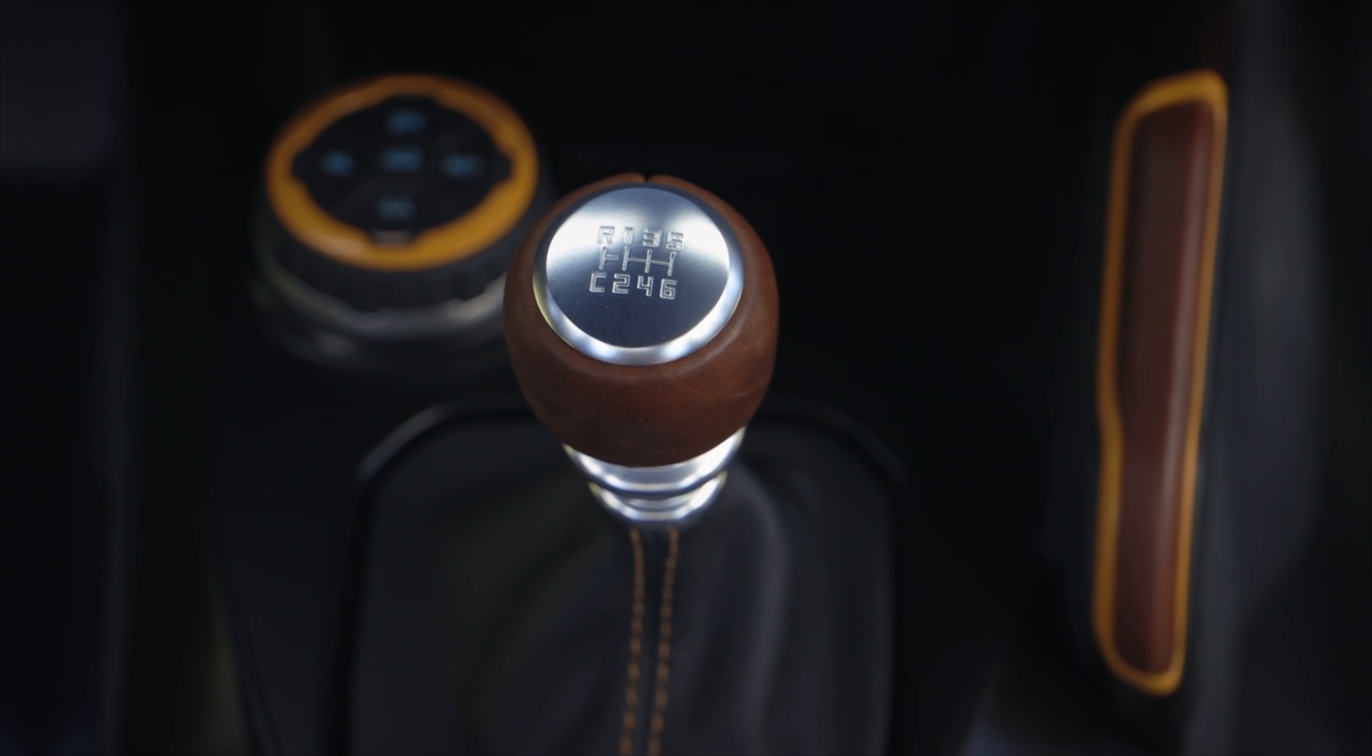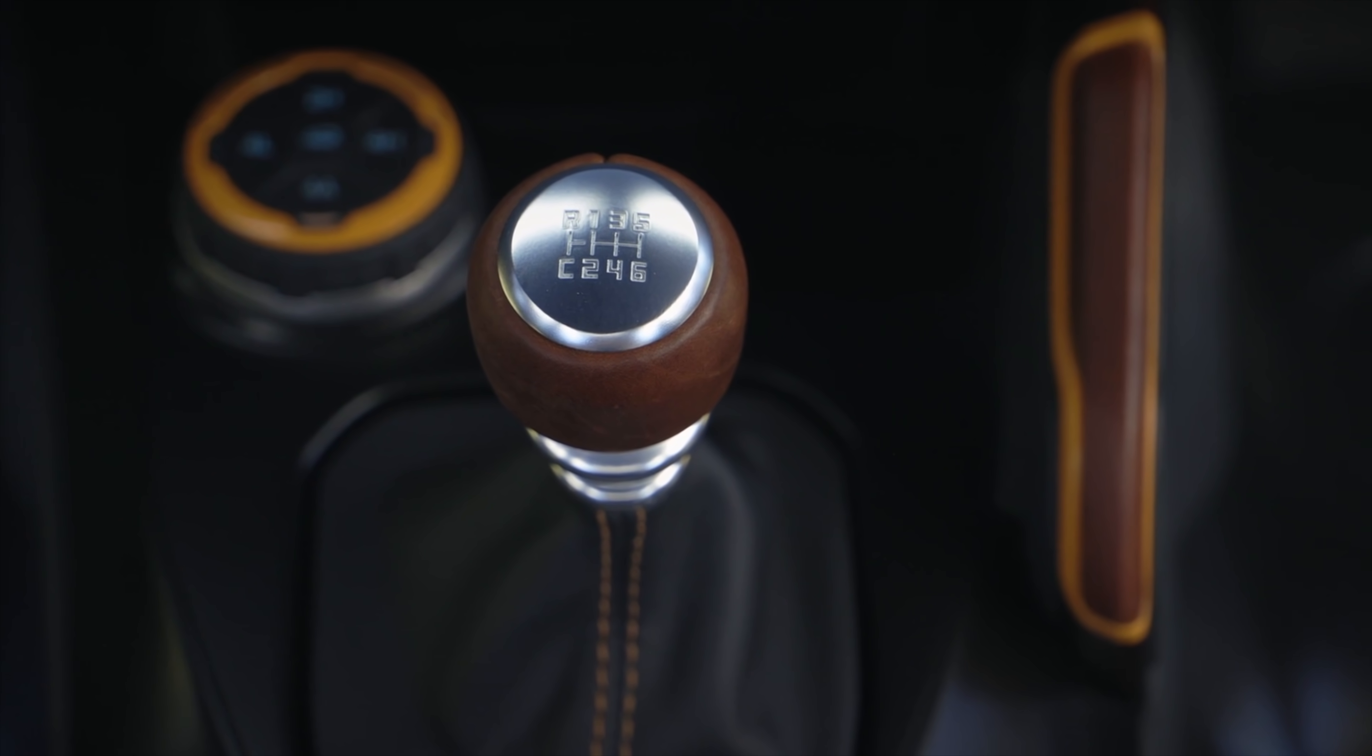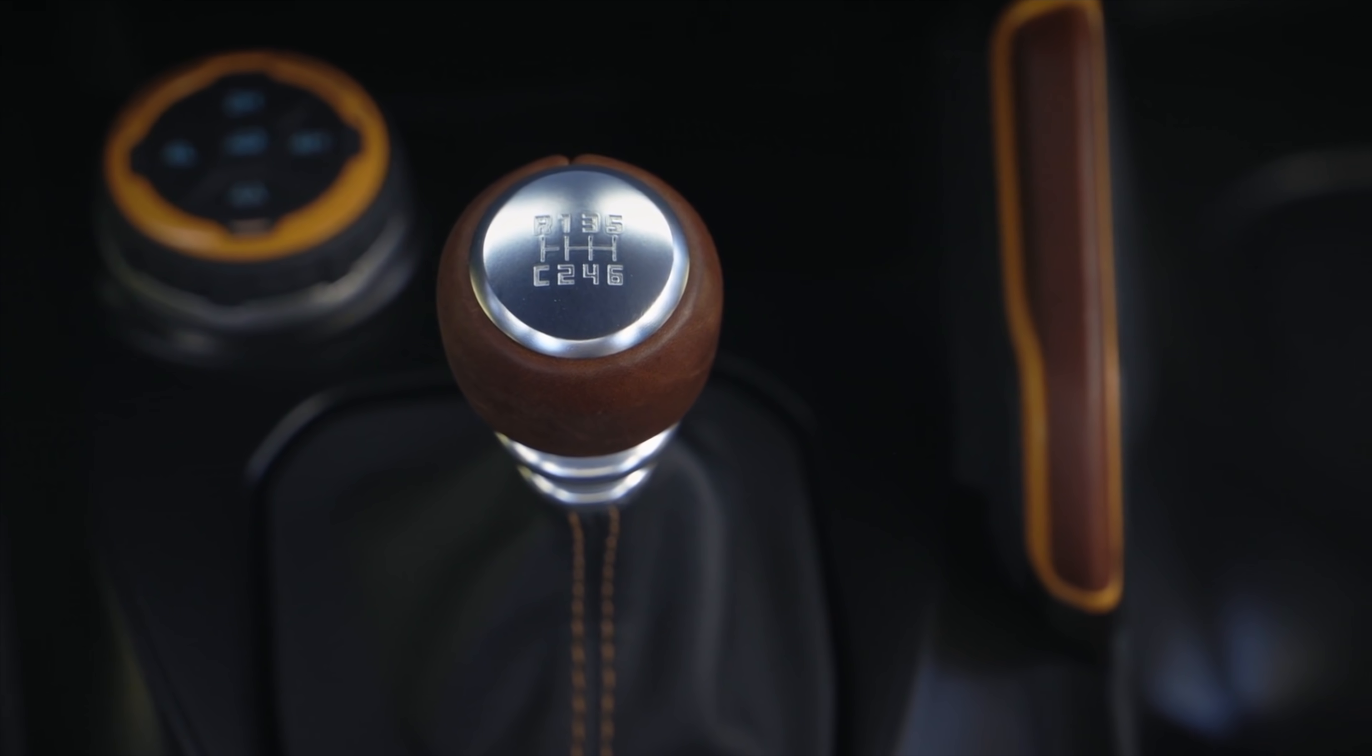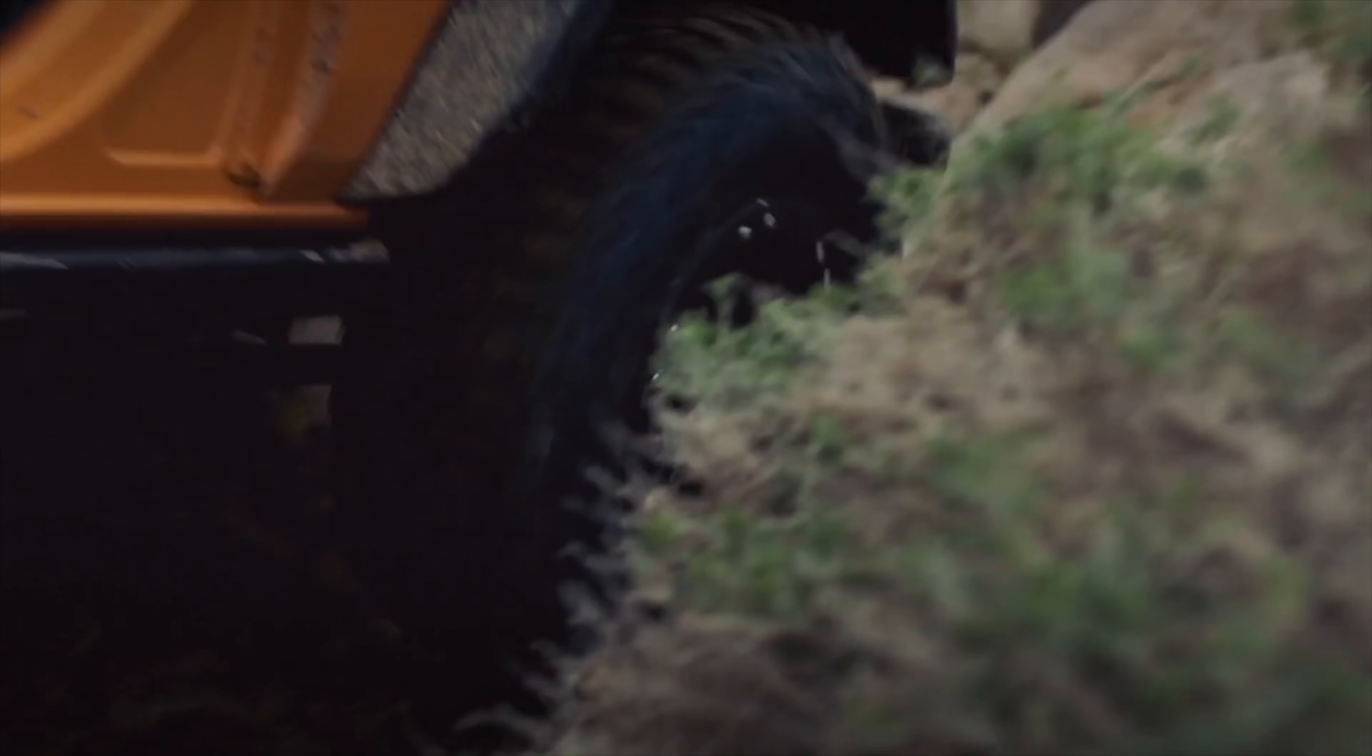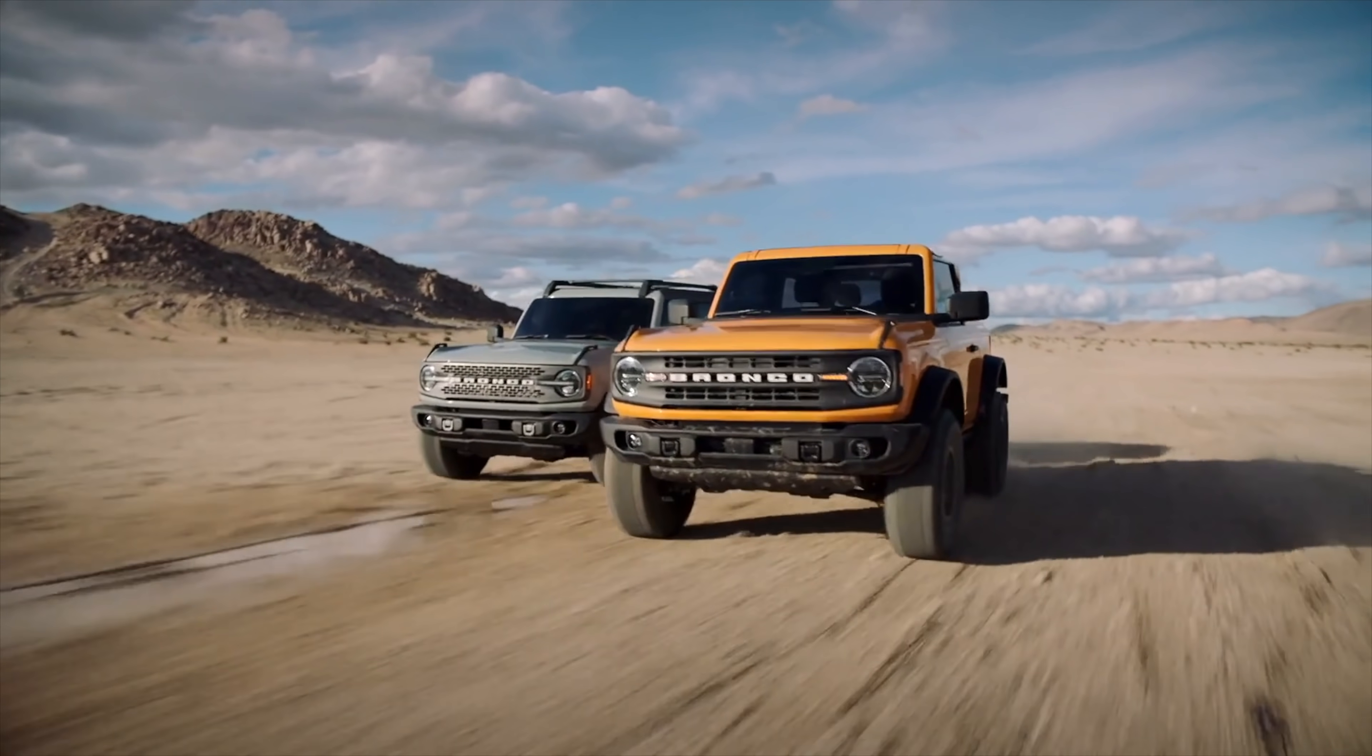So if you look at the manual gear selector, you'll see a little C on it. So what is that C for? Now the Bronco is not the first vehicle to use a crawler gear, but it is new and it's exciting, so we're going to talk about it.